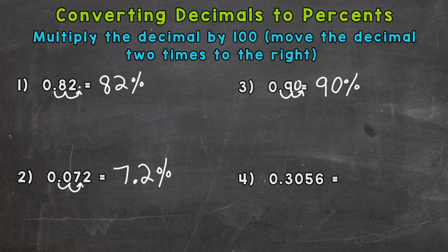And lastly, three-thousand-fifty-six ten-thousandths. Move the decimal twice, and that is going to equal 30 and fifty-six-hundredths percent. Again, multiply the decimal by 100 because percent means per 100.